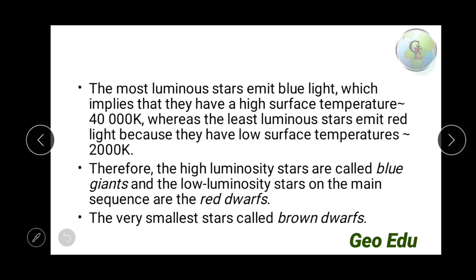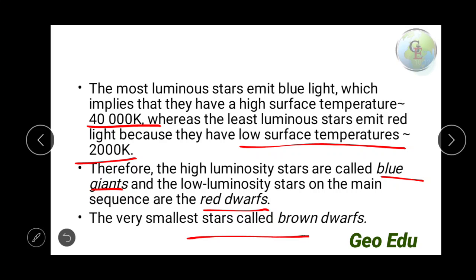When surface temperature is high — around 40,000 Kelvin — it is the property of a blue giant. When surface temperature is low — around 2,000 Kelvin — it is the property of a red dwarf. Very small stars are brown dwarves.